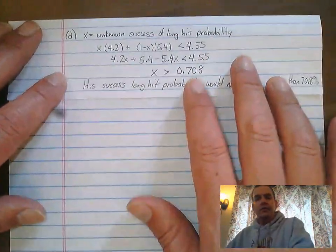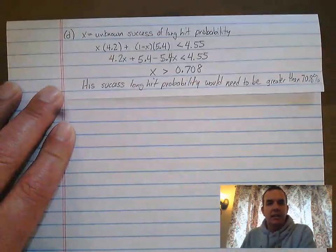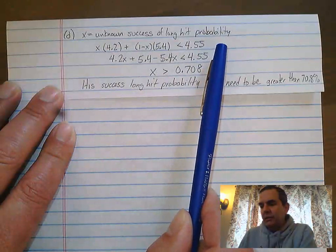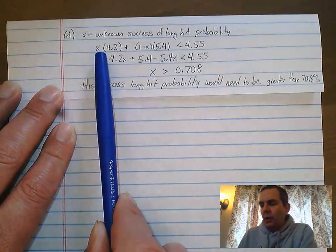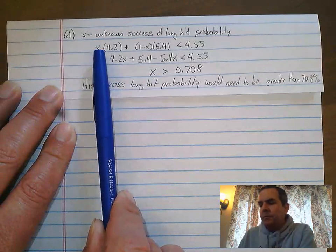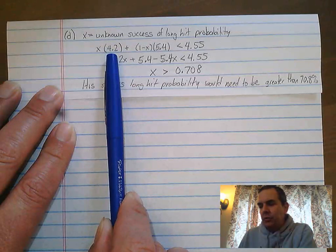You could use any variable. I used X. You could have used P. I defined my variable, so X is my unknown success of a long hit probability. That same formula from before, the expression, X times 4.2, that's his expected value on a successful long hit.